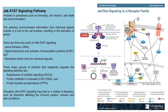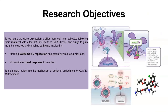Disruption in this signaling pathway leads to a variety of diseases such as immune system cancers and skin conditions. We wanted to compare gene expression profiles from cell line replicates following treatment with either SARS-CoV-2 or SARS-CoV-2 and the drugs, to gain insight into genes and signaling pathways involved in blocking SARS-CoV-2 replication, modulating the host's response to infection, and to understand the mechanism of action of amlodipine for COVID-19 treatment.